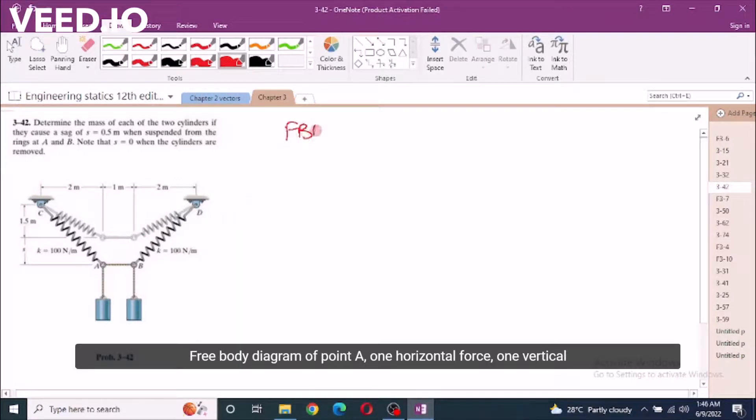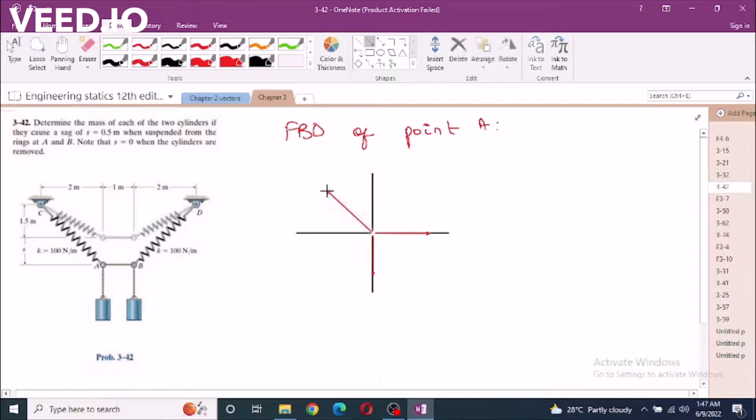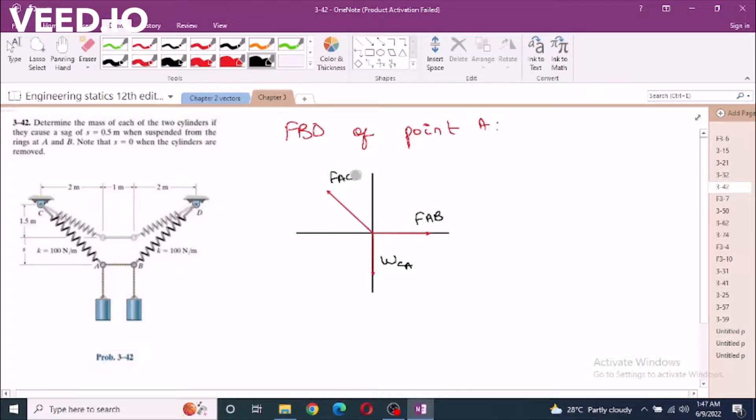Free body diagram of point A. Step 1, place on the forces. One vertical force and one force making an angle. Let's label them - let's call this FAB, the weight on cylinder A, and this force FAC.